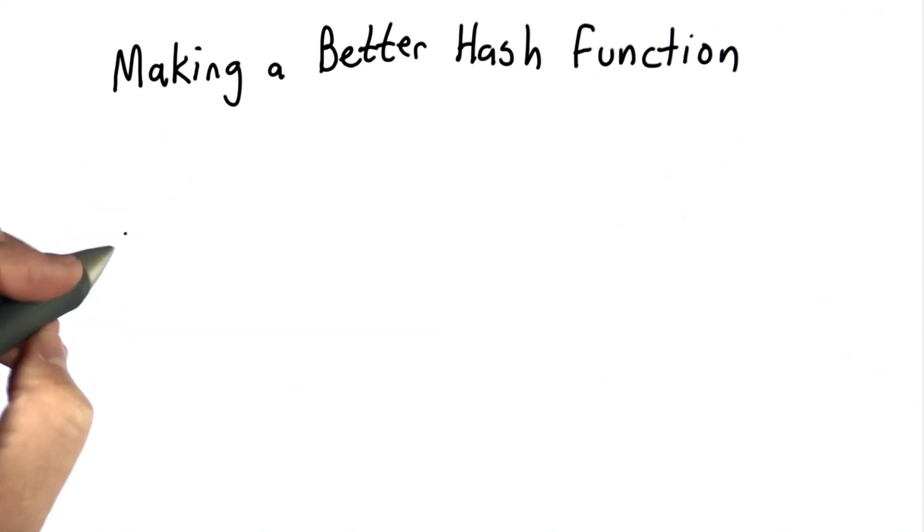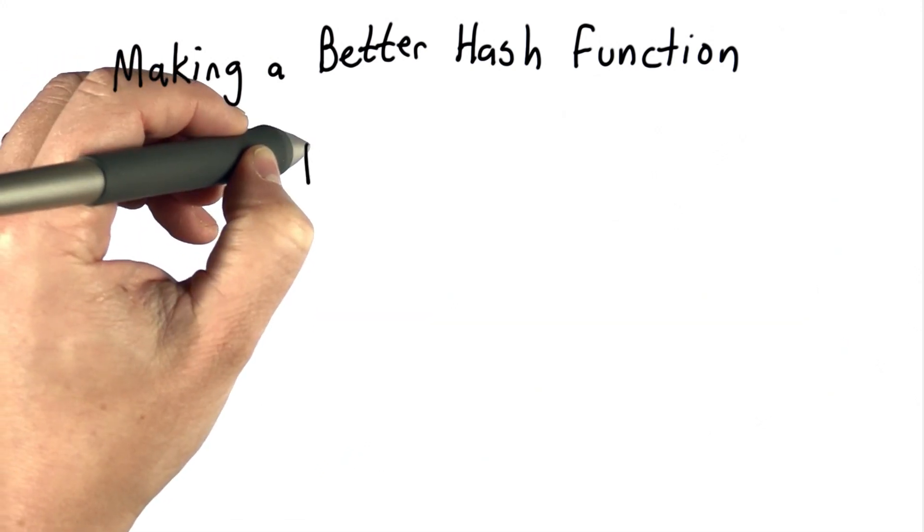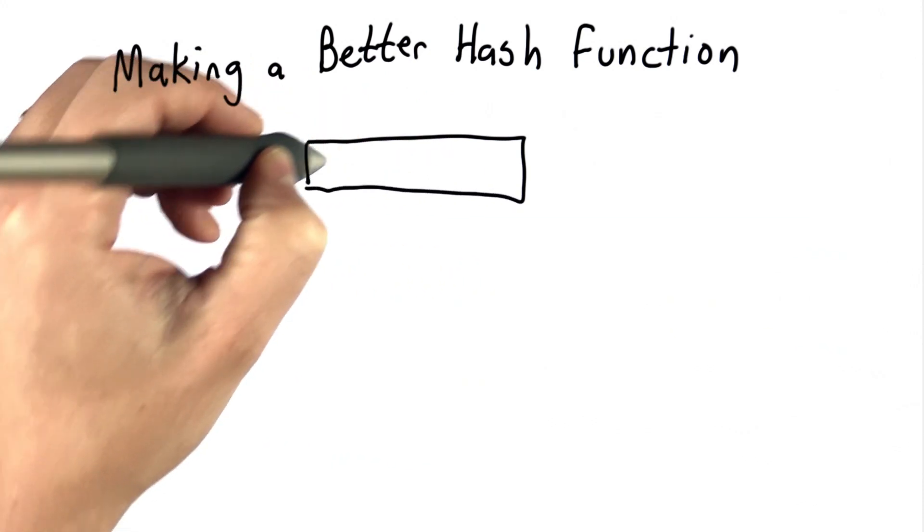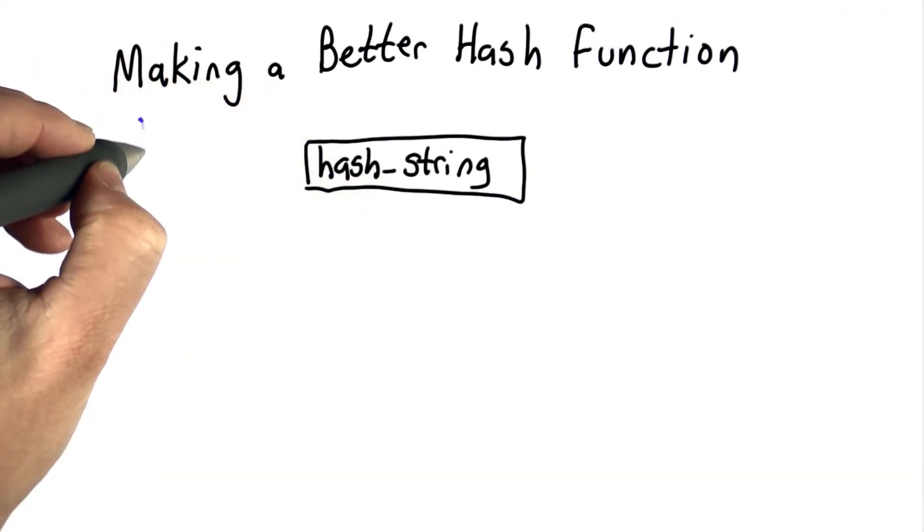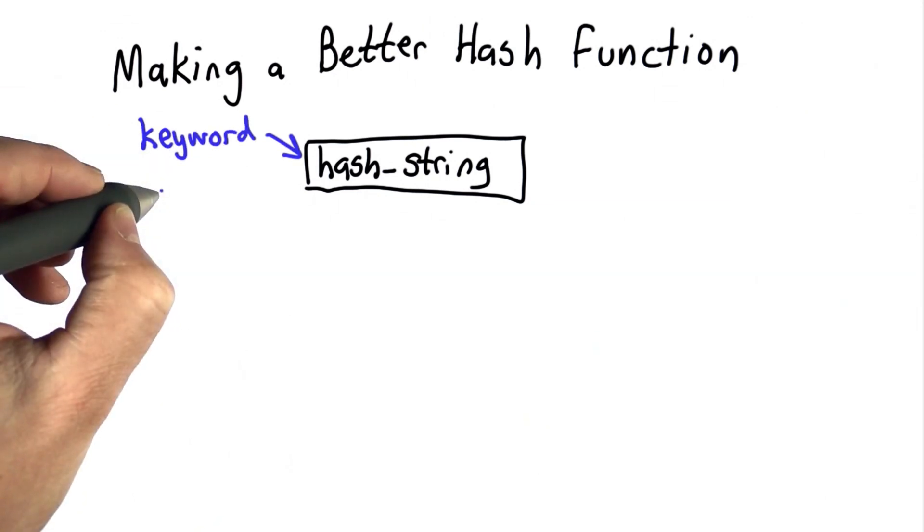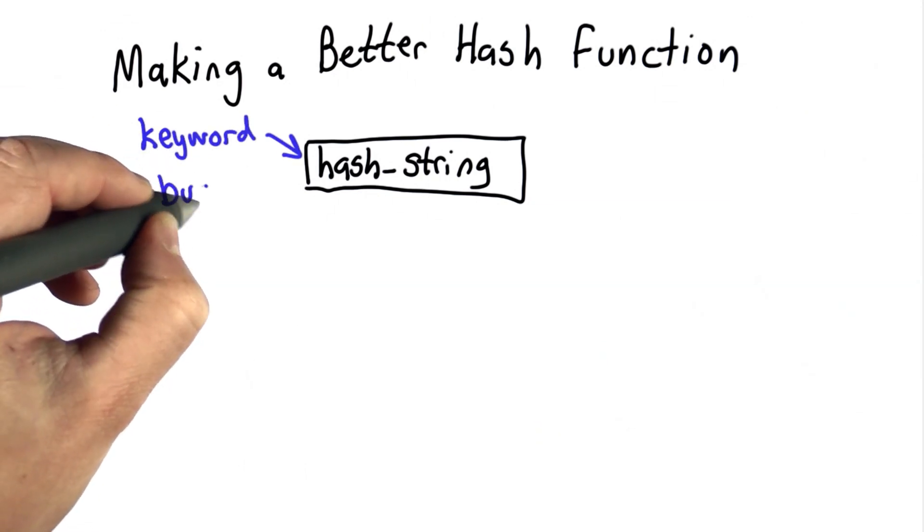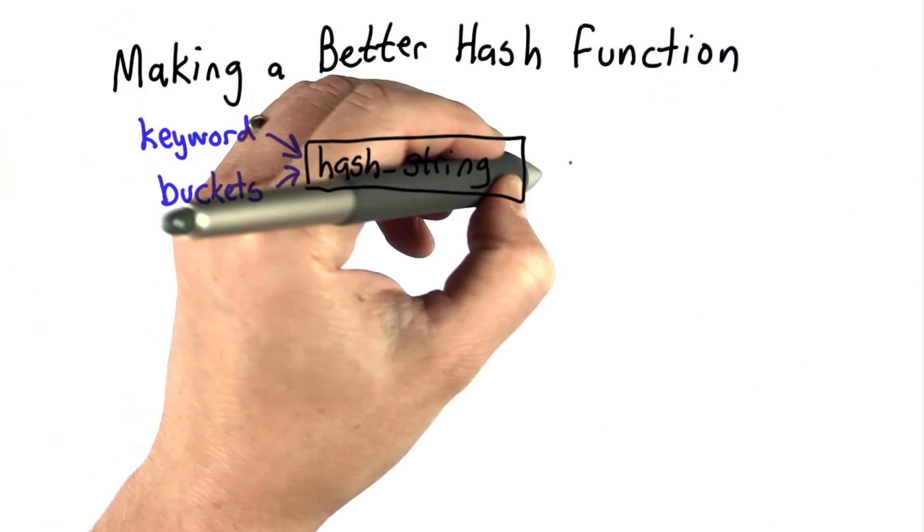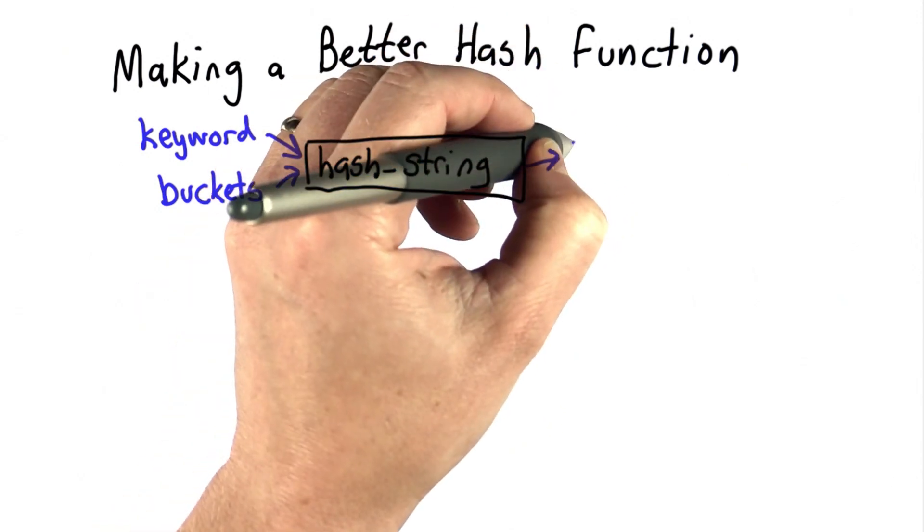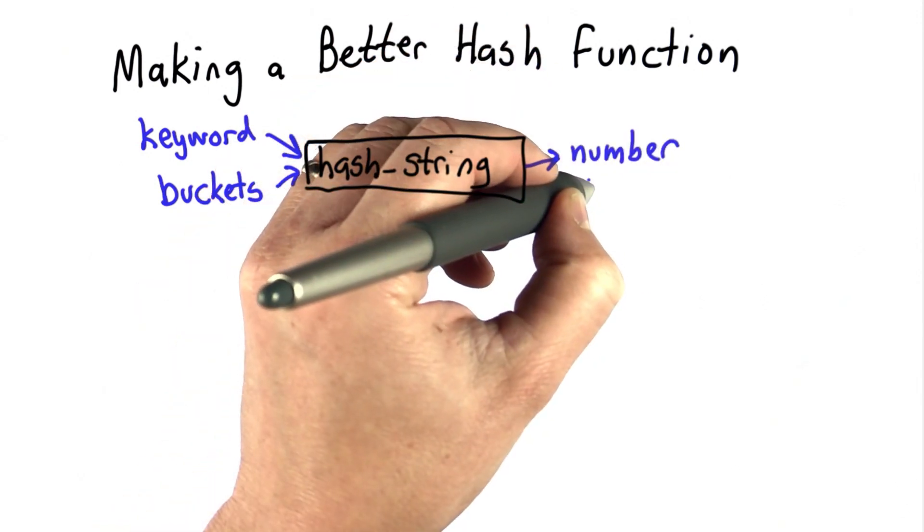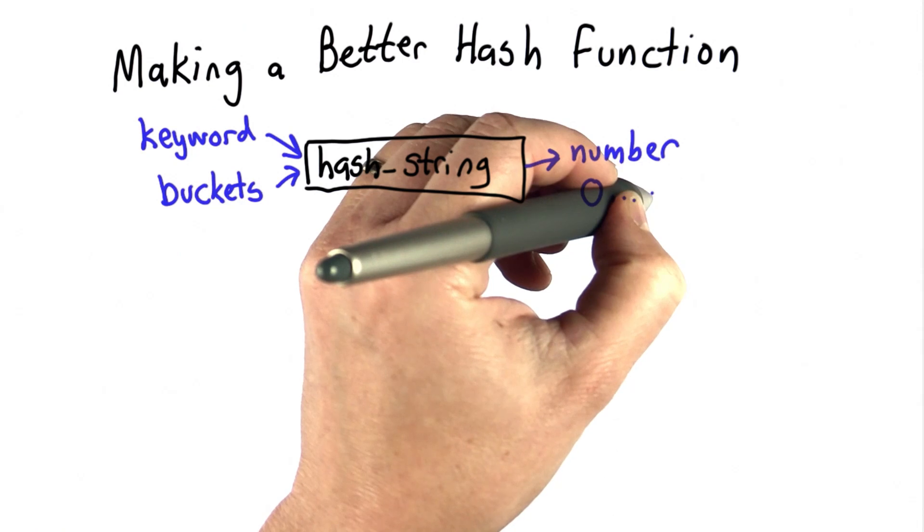We want the same property we had before, a function that takes two inputs: the keyword, which is a string, and the number of buckets, which is a number. The output is the hash value in the range from 0 to number of buckets minus 1.